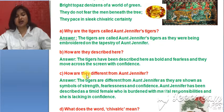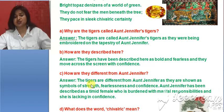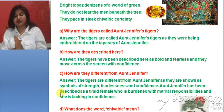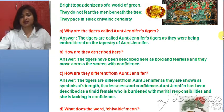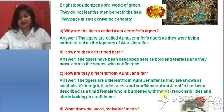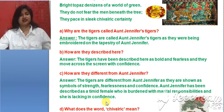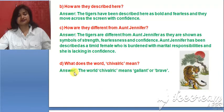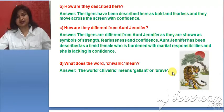Next question: How are the tigers different from Aunt Jennifer? The tigers are symbols of strength, fearlessness, and confidence, while Aunt Jennifer is described as a timid woman burdened with marital responsibilities and lacking in confidence. What does the word 'chivalric' mean? Chivalric means gallant or brave.